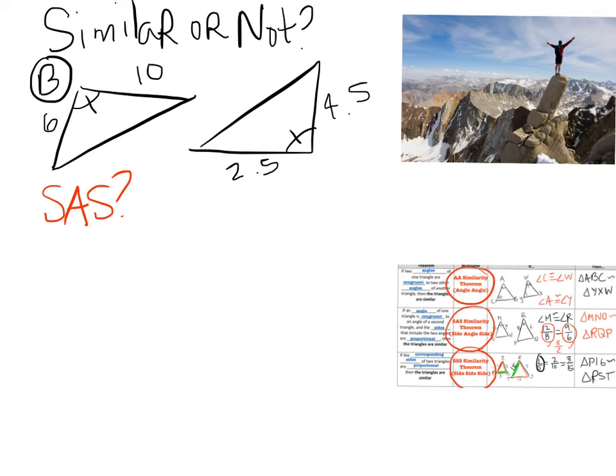The first thing I need to check is, are the angles congruent? And that is already done. But the second requirement is that the two corresponding sides that include the angle, so that's the red and the green, are they proportional? So let's look at them. The first one is 6 to 2.5, that's one ratio. And the second is 10 to 4.5.